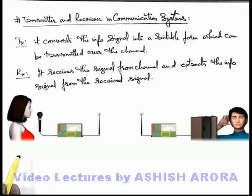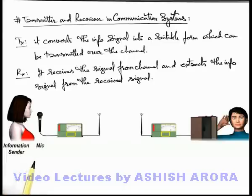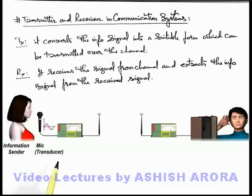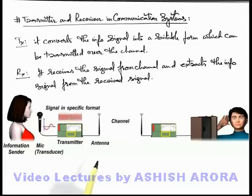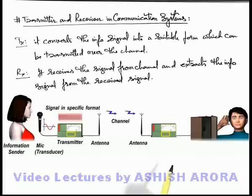Here we can see an information sender who speaks out something into a mic. This mic is acting like a transducer — it converts the voice signal into an electrical signal. The electrical signal is fed to the transmitter, and the transmitter converts the electrical signal into a specific form which can be submitted to a channel, through which it can be propagated over a long distance to another point where information is to be received.